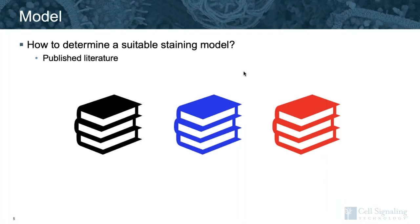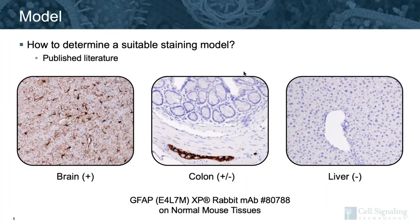Conclusions that have support via more than one assay, including non-antibody-based assays, are likely to be more reliable. One example is that of GFAP. This protein has been well studied, and we know it should be expressed in brain and nerves only. For this reason, brain can serve as a reliable positive model. Liver is a suitable negative model, and a tissue such as colon that shows staining of nerves in the myenteric plexus has elements of both positive and negative in the same tissue. A reliable positive model is necessary, but the inclusion of a known negative model is also important. For successful IHC, we want to ensure there is positive staining where we expect and no staining when the protein is not expected to be expressed.